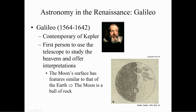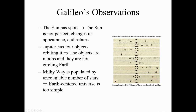One of the first things he did was look at the moon. He noticed that the moon's surface has features similar to the earth. At the time, most people thought the moon was just a smooth sphere, but he noticed it was similar to the earth — the moon is nothing more than a ball of rock.